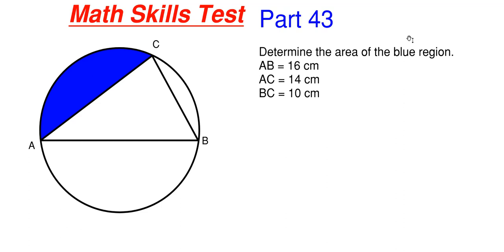So this will be our 43rd part in this particular math skills test series and what we have going on here is that we have to determine the area of the blue region shown here of this circle and we have this little triangle ABC inside of the circle. So we are told a bit of information here that A to B is 16 centimeters, A to C is 14 centimeters, and B to C is 10 centimeters.